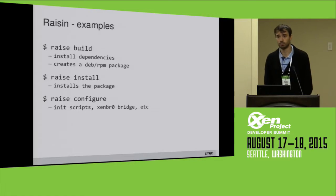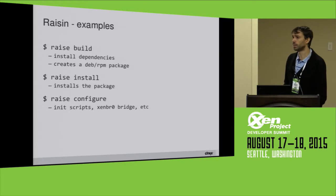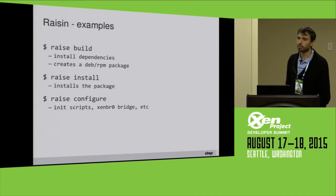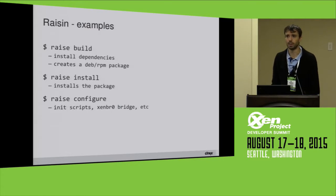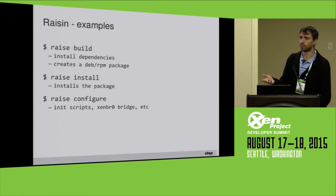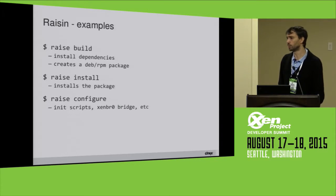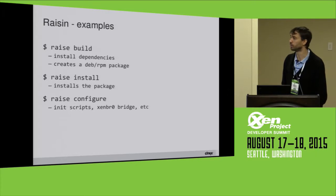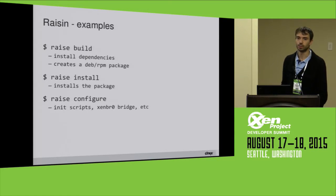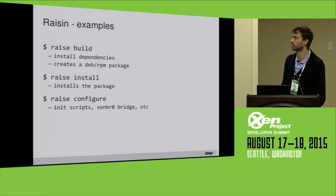Using Raisin is pretty simple. You run 'raise build', and Raisin fetches all the Git trees, builds them, and creates a deb or RPM package for you with all the binaries. The deb and RPM packages aren't smart — they don't have proper dependencies set up — but they're a tool to be able to uninstall afterwards if you want; it's just a bit more than a tarball. 'Raise install' installs the package, and 'raise configure' configures the system — currently it mainly sets up the XenBR0 bridge for Xen. The 'raise build' command is the real value of Raisin.